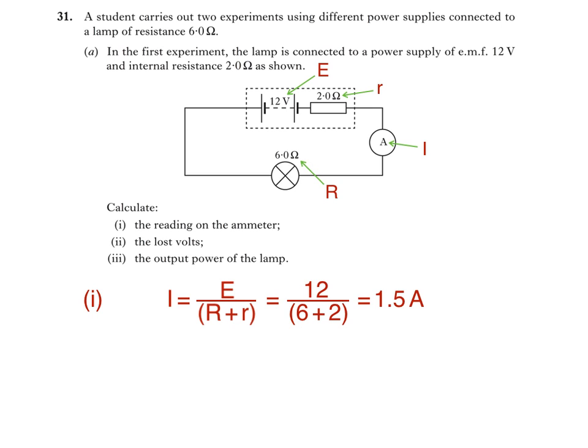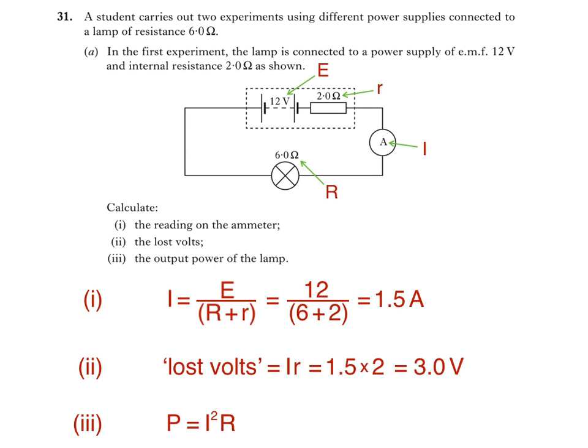Part 2 of the question is more straightforward. The lost volts can be calculated by multiplying the current I by the internal resistance small r. So lost volts equals 1.5 times 2, which equals 3 volts. Finally, to find the output power of the lamp, we use P equals I squared R, where I is the current in the lamp and R is the resistance of the lamp. This gives us 1.5 squared times 6, which equals 13.5 watts.